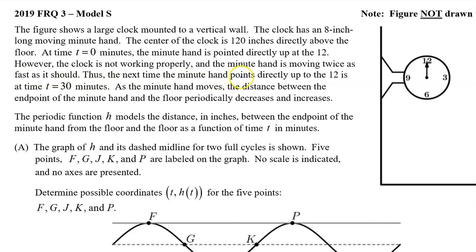Thus, the next time the minute hand points directly up to the 12 is at time t equals 30 minutes. As the minute hand moves, the distance between the endpoint of the minute hand and the floor periodically decreases and increases. The periodic function h models the distance in inches between the endpoint of the minute hand from the floor as a function of time t in minutes.